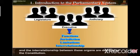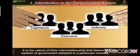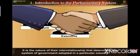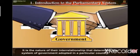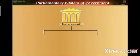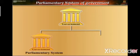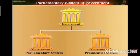The interrelationship between these organs are decided by the Constitution. It is the nature of their interrelationship that determines the system of government adopted in a particular country. Now there are two types of government: first is the parliamentary system of government, and second is the presidential system of government.